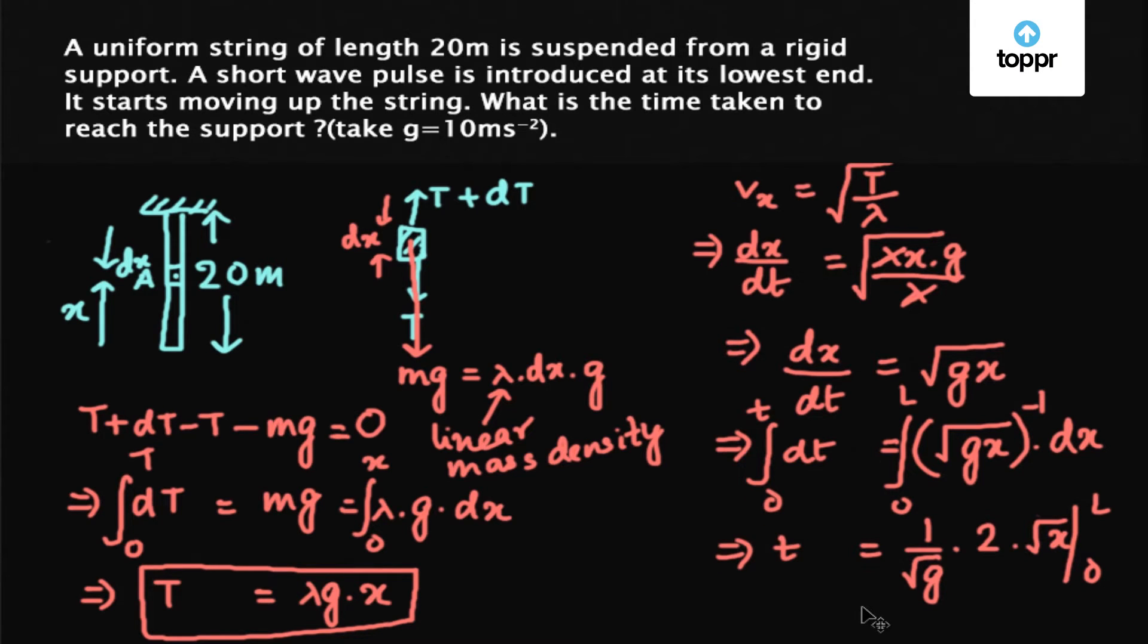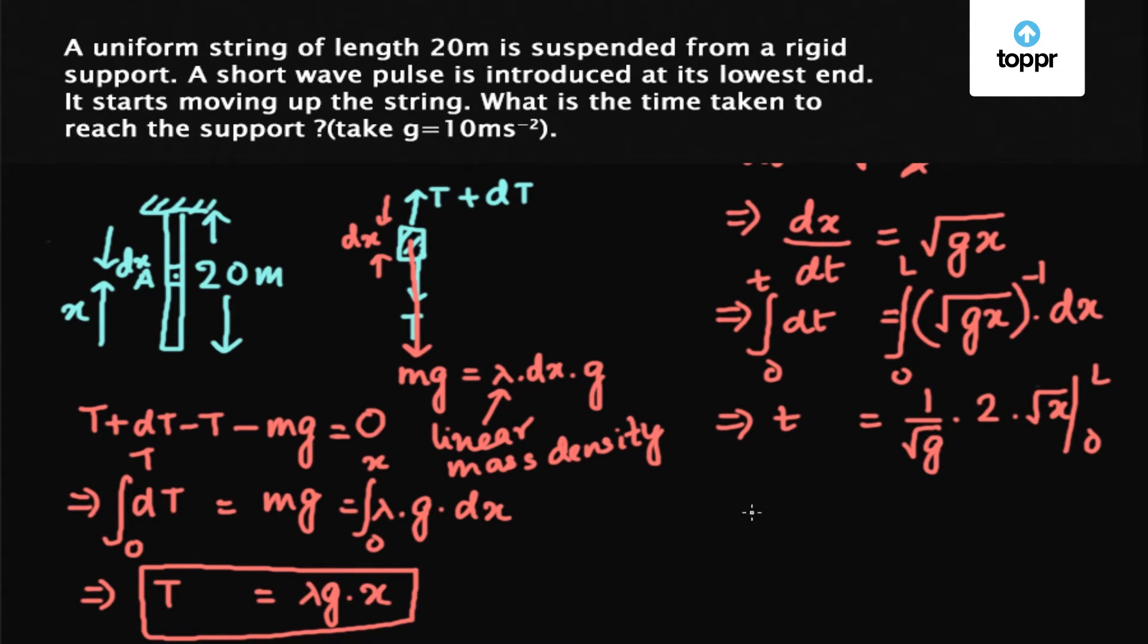Which comes out to be t equals 2 root L upon g. Now L is given to be 20 meters and g is 10 meter per second squared. So we have the time taken for the pulse to reach the support to be 2 into root 2 seconds.